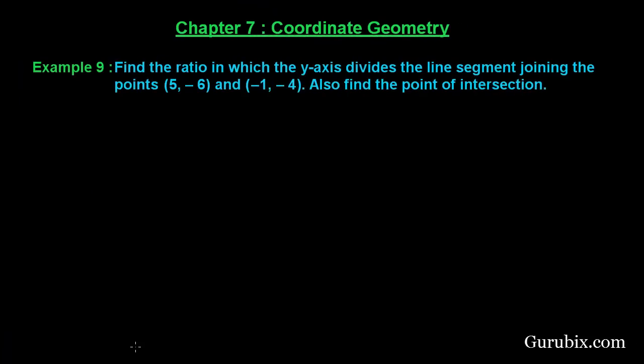Welcome friends, let us solve example number 9 of chapter 7. The example says: find the ratio in which the y-axis divides the line segment joining the points (5, -6) and (-1, -4). Also find the point of intersection. This is a very important question. Let us solve it.